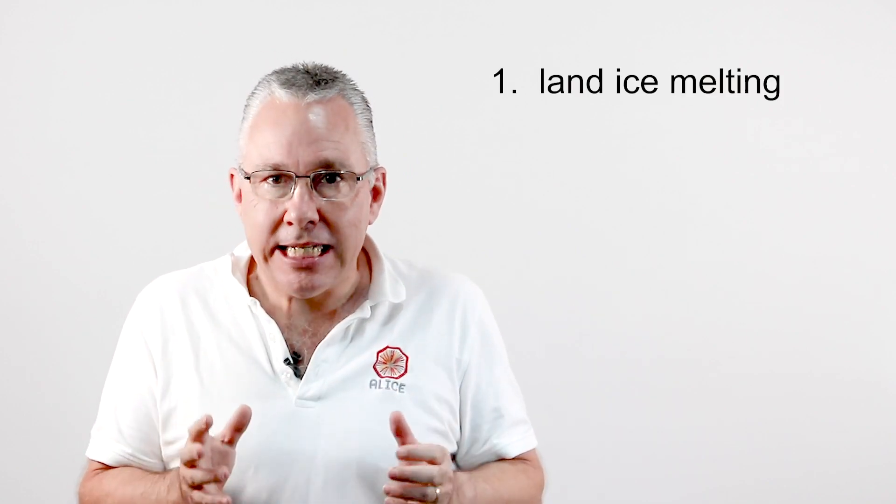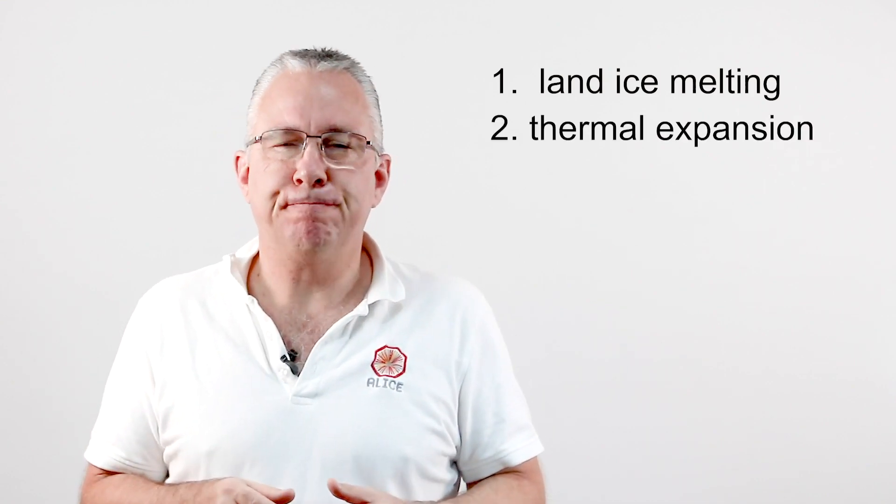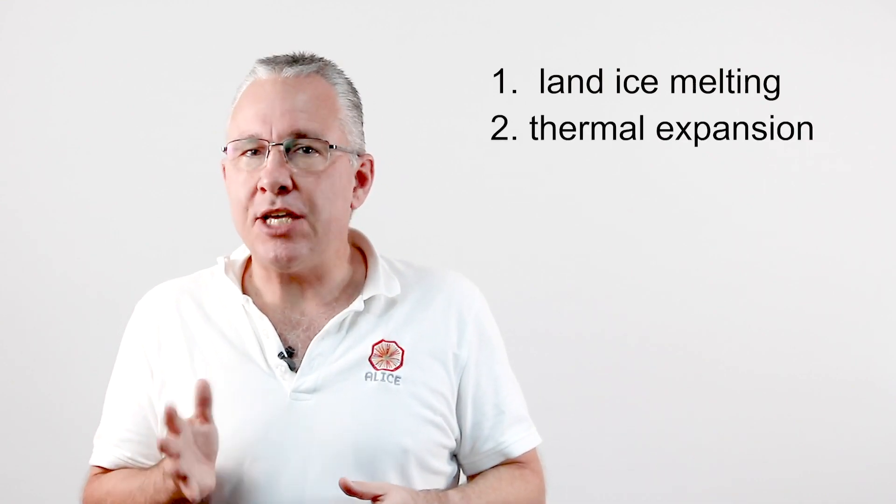There are three main things affecting sea levels. The first is melting, but of land ice. The second, and by far the greatest contributor, is what's called thermal expansion of the oceans. And the third is something called glacial isostatic adjustment. Most of this video we're going to look at the physics of thermal expansion, but I do want to look at the other two as well.